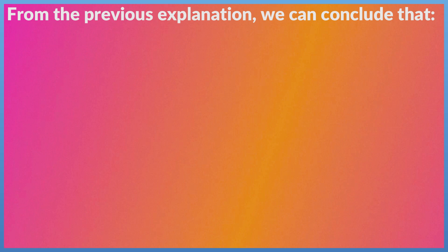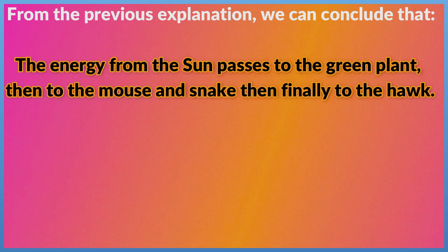From the previous explanation, we can conclude that the energy from the sun passes to the green plant, then to the mouse and snake, then finally to the hawk.